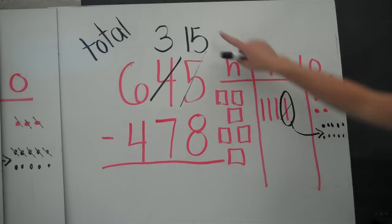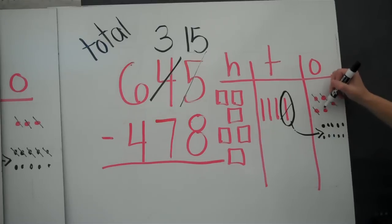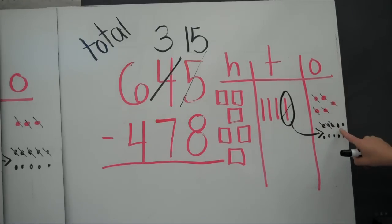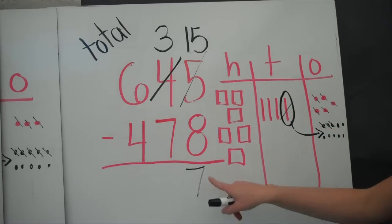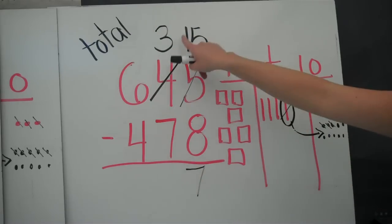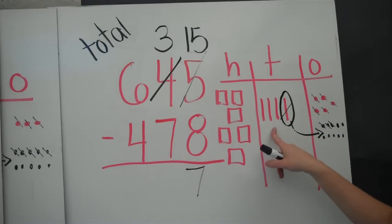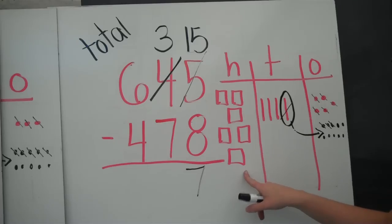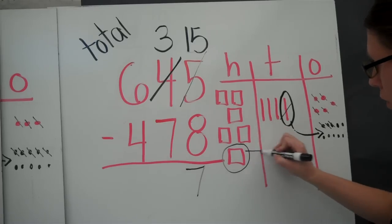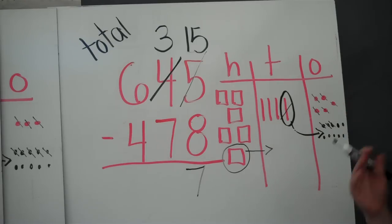Now I can subtract in my ones column: 15 minus 8. I can cross off 8 now, and I have 7 left. 15 minus 8 equals 7. Now I can go into my tens column. I have 3 tens, and I need to take 7 tens away. Do I have 7 tens to take away? No way. I have to go into the next column and regroup. I'm going to take 100 and put it into my tens — 10 tens, because 100 equals 10 tens.